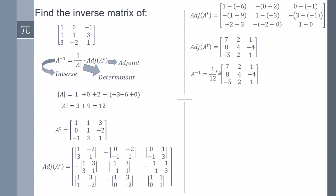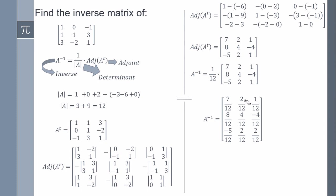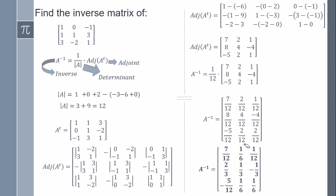Now we multiply by one over twelve. Since this is a scalar, each value in the adjoint matrix gets multiplied by one over twelve. After simplifying — two over twelve, minus four over twelve, four over twelve, eight over twelve — dividing: two over twelve divided by two gives one over six, eight over twelve divided by four gives two over three, four over twelve gives one over three, and this gives negative one over three.